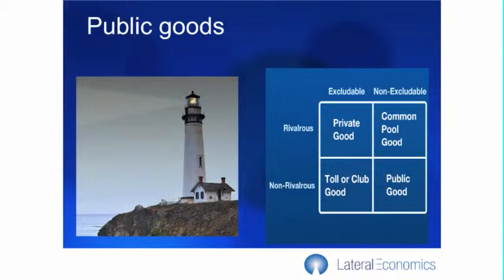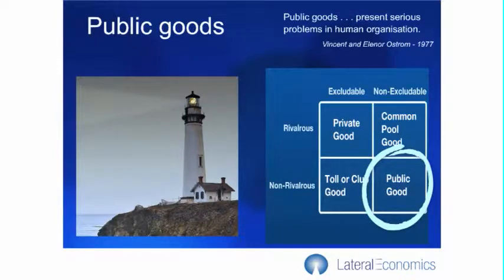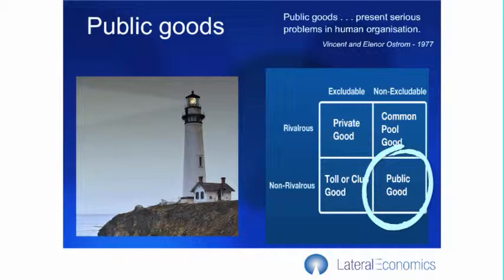Economists have regarded public goods as a problem. On the excludability axis, you see the free rider problem. If something is non-excludable, people can free ride on that investment without contributing to it — say, if somebody has put their money into providing a lighthouse. Economists hate free rider problems, and so they say that public goods are a serious problem in human organization.